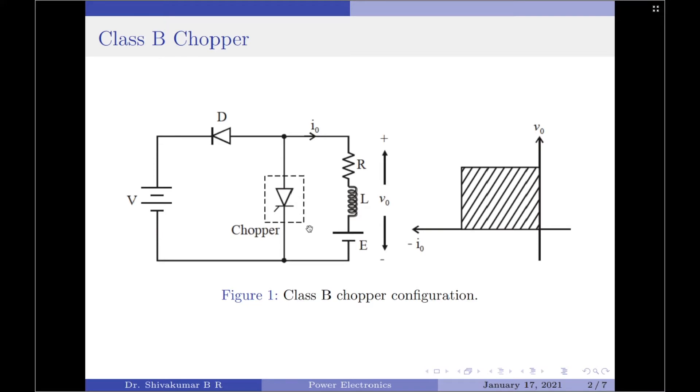It should be noted, both class A and class B choppers are single quadrant choppers. A class A chopper is a step-down chopper, whereas a class B is a step-up chopper.